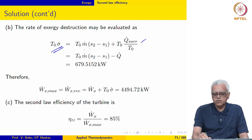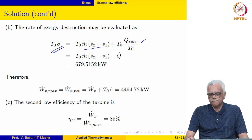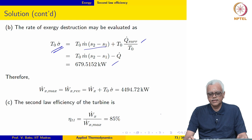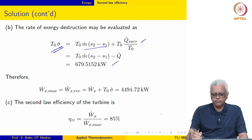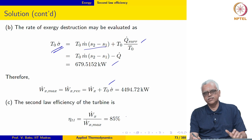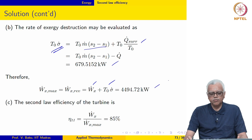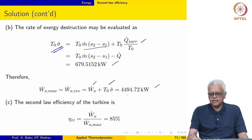Sigma dot equals m dot times S2 minus S1, plus Q dot surroundings over T naught, where Q dot surroundings equals minus Q naught. Plugging in the values, the rate of exergy destruction comes out to be 679.5152 kilowatts. Adding this exergy destruction — which is also the lost work — to the actual power gives the maximum possible power output of 4494.72 kilowatts.